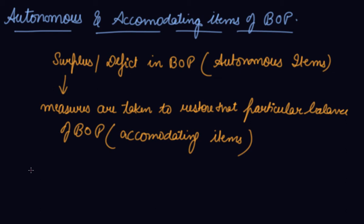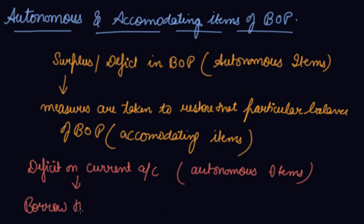Let's say there is deficit on current account. So this deficit is caused by your autonomous items. By this deficit, the government decides to borrow the loan from international markets, rest of the world, to avoid this deficit. So this is your accommodating items.